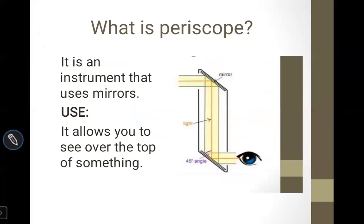Let's move on to our topic: periscope. What is a periscope? This is an instrument where mirrors are used. You can also make this periscope yourself. You can make a metal mirror, or a box or cardboard and put the mirror in the middle of it.